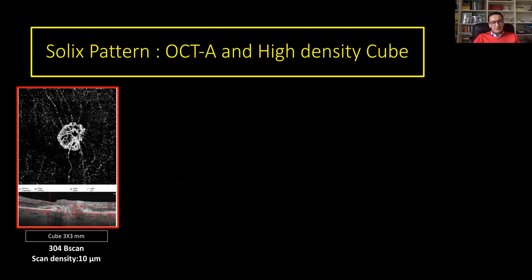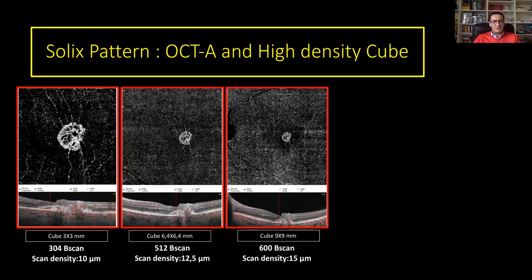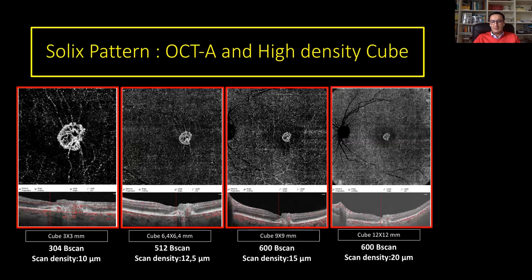One of the habits in OCTA is to use a very short scan to obtain the best resolution. Thanks to the new Solix platform, with the improvement of B-scan density within the cube, you can see the CNV lesion very well whatever the size of the cube — 6, 9, or 12. In a 12x12 cube you have 600 B-scans with a scan density of 20 microns.